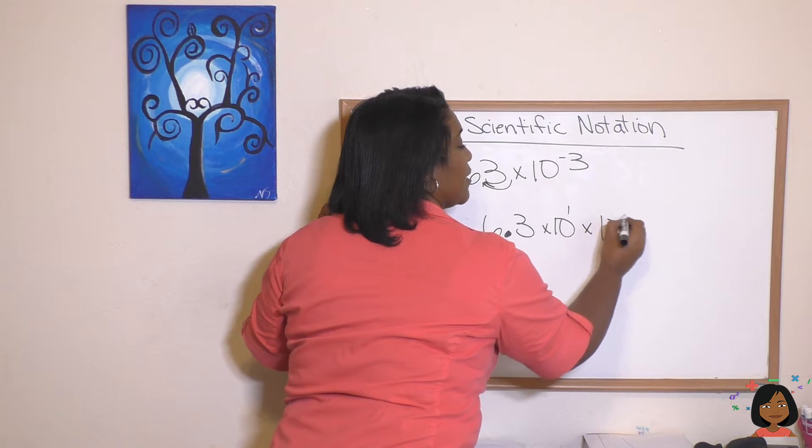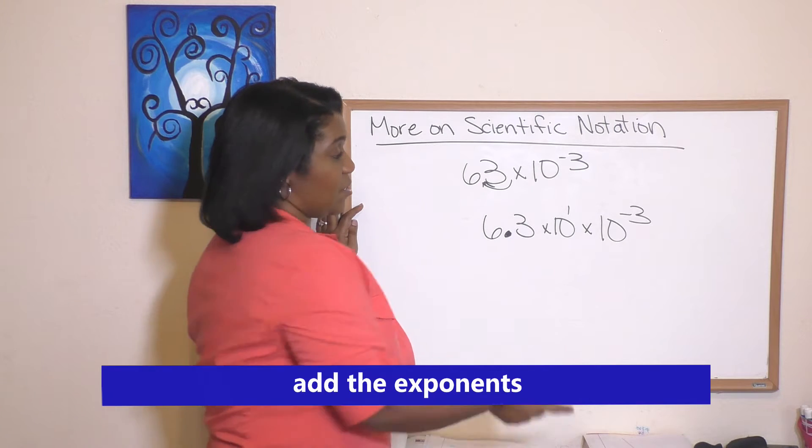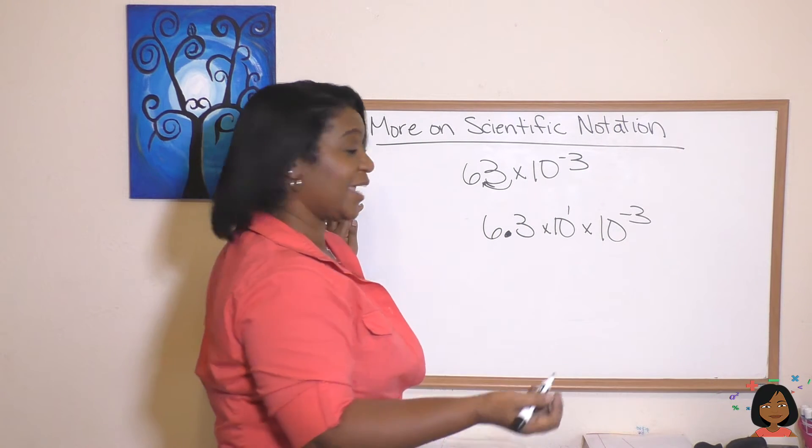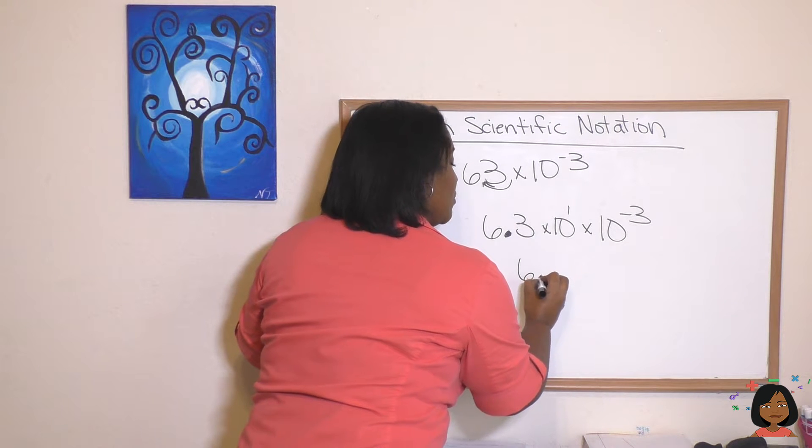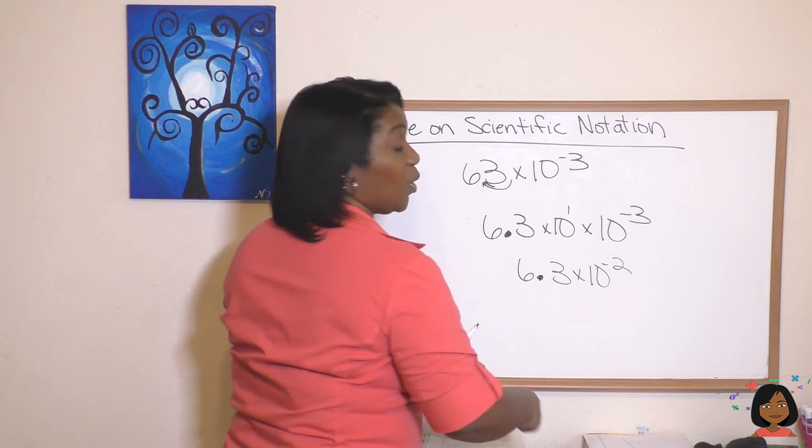The rule is: add your exponents. One plus a negative three is going to give me a negative two. So this will be 6.3 times ten to the negative two.